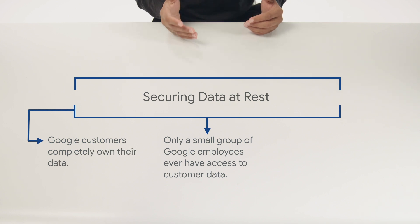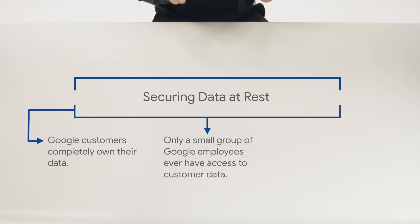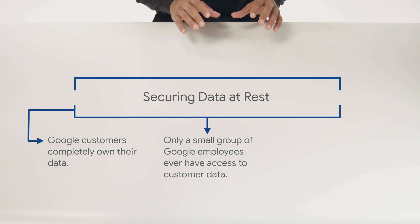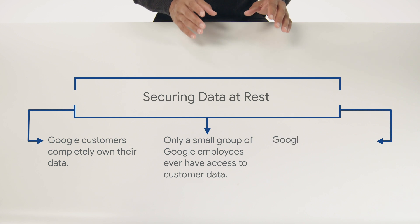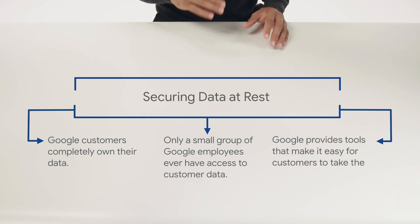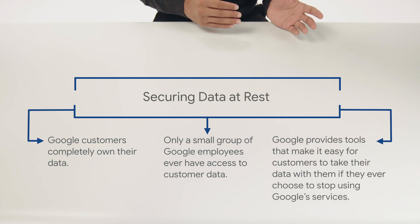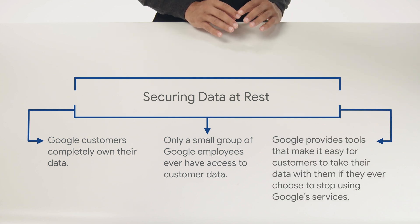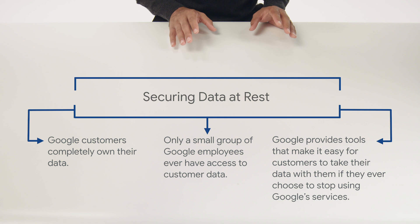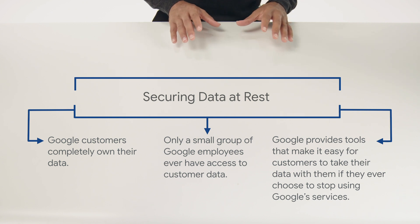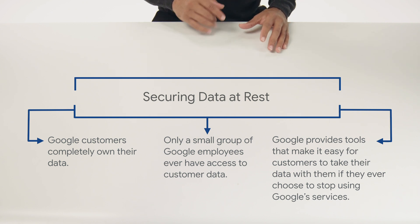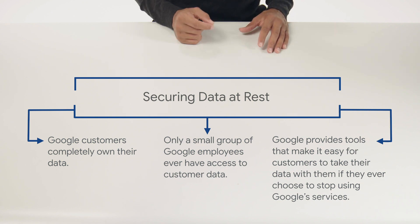And if customers delete their data, Google commits to deleting it from their systems within 180 days. Finally, Google provides tools that make it easy for customers to take their data with them if they ever choose to stop using Google services. These are just a few examples of how Google Cloud protects customer data that lives in Google Cloud. Let's look at a few more.